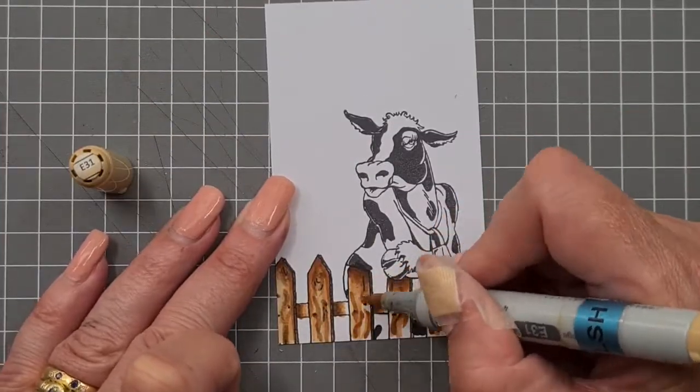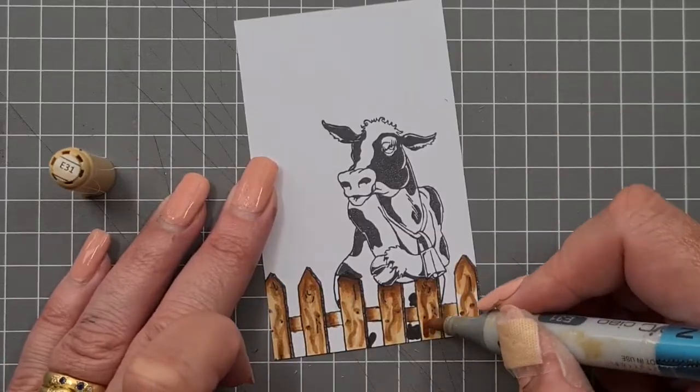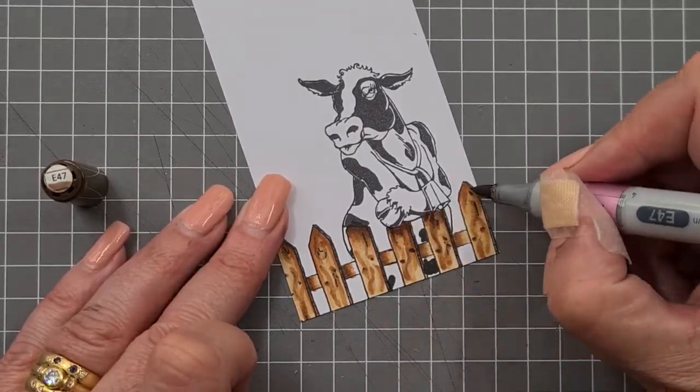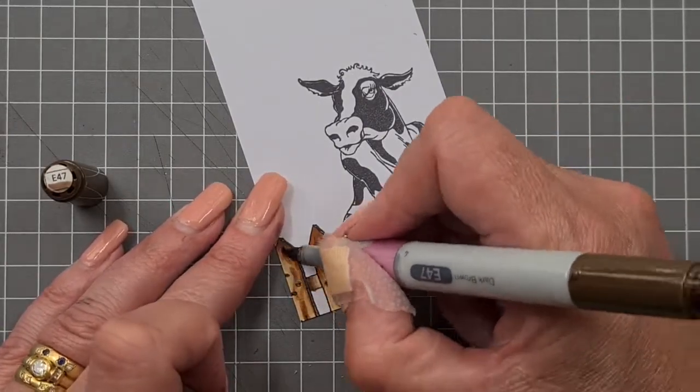Because it's going to be overlapping the fence, we're going to put a bit of shadowing underneath those three spokes of the fence.